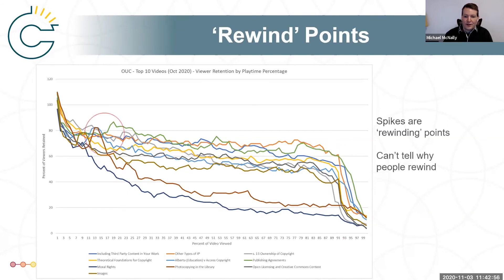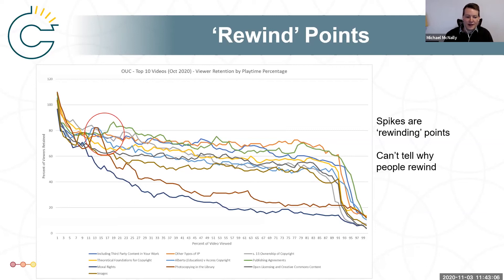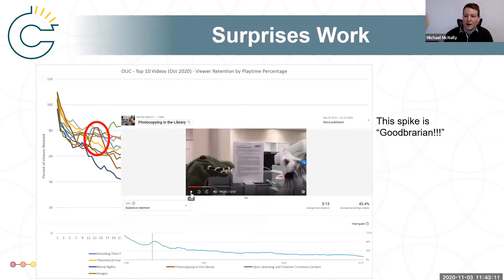There are also a series of spikes in the data. Those are basically rewinding points where people are going back. Just out of the YouTube data, you can't necessarily tell what all of those are caused by, but we do know in some cases. This is the largest spike in the data set. It's from one of the more popular videos — photocopying in the library.